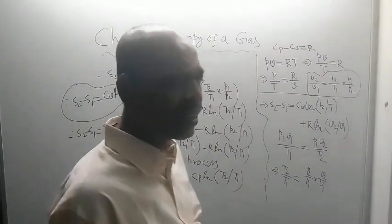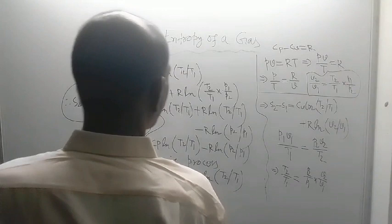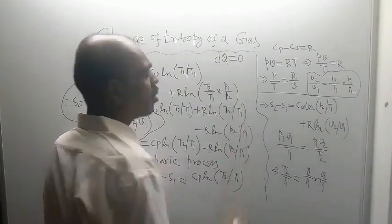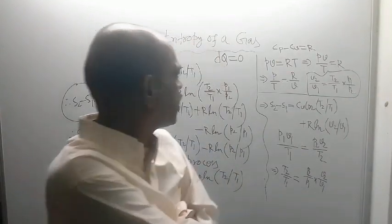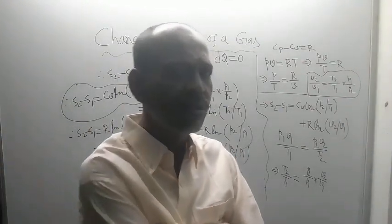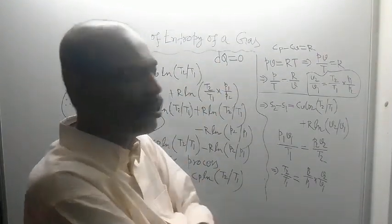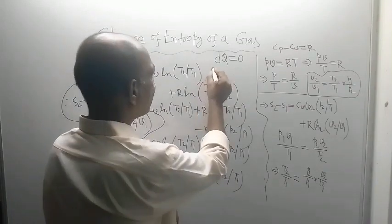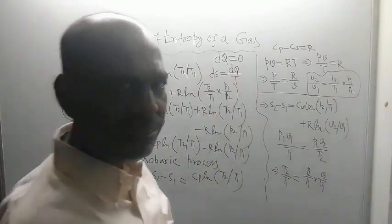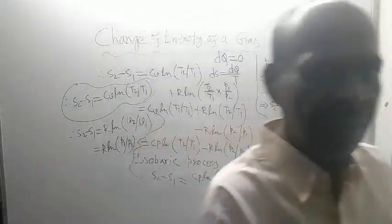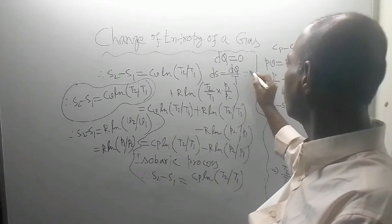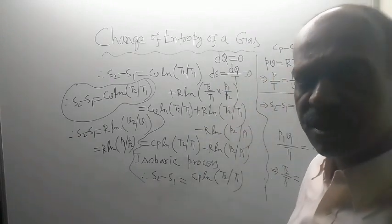For an adiabatic process — specifically a reversible adiabatic process — we know that DQ = 0. Since DS = DQ/T, and DQ is zero, therefore DS = 0. DS = 0 means S is constant: there will be no change in entropy. For a reversible adiabatic process, S is constant and the change of entropy is zero.